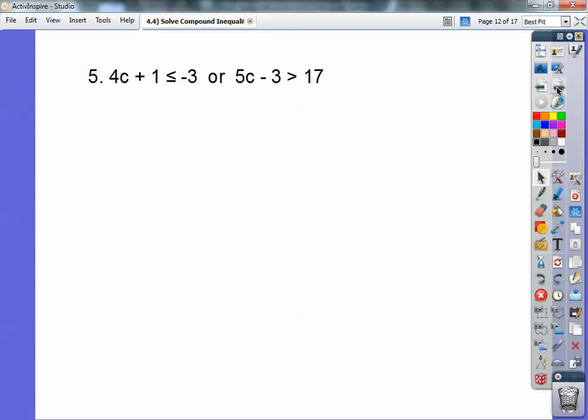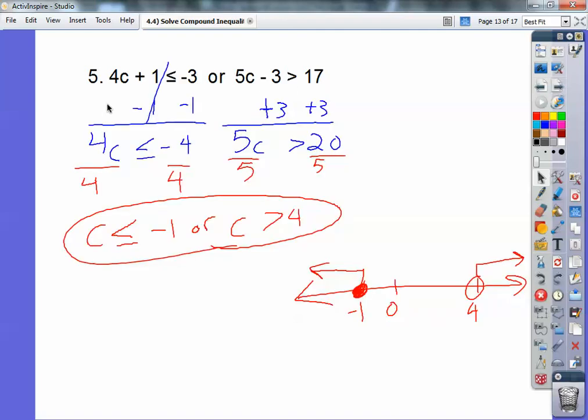Let's try another here. Okay, another or statement. Here I'm going to subtract one and subtract one. Here I'm going to go plus three and plus three, and then here we go. So 4c, the ones cancel, and you get negative 4. And when we divide by four, this four right here, this blue four right here, when I divide by four, I get negative 1.